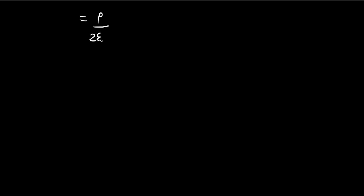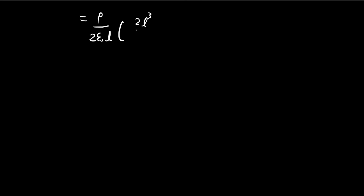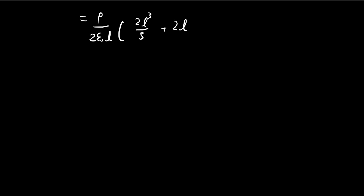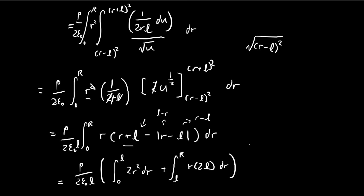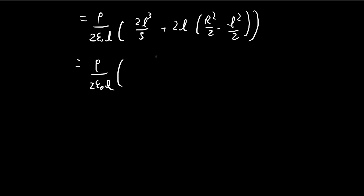With the constants factored out, the first integral evaluates to 2L to the power of 3 divided by 3. The second integral gives 2L times r squared over 2, evaluated from L to R, which is r squared over 2 minus L squared over 2. Simplifying, the 2s cancel, leaving L r squared minus L cubed, and minus one-third L cubed from the first term.